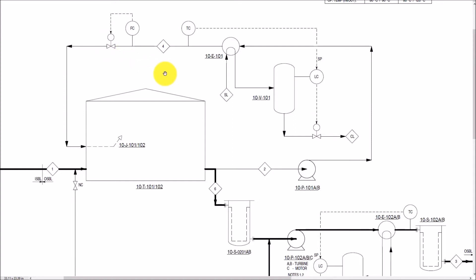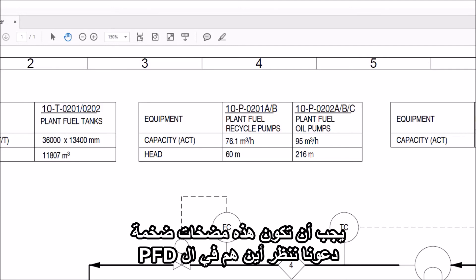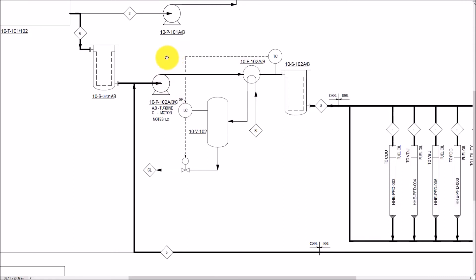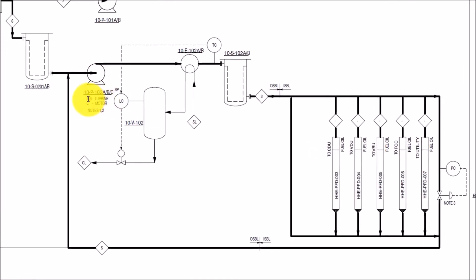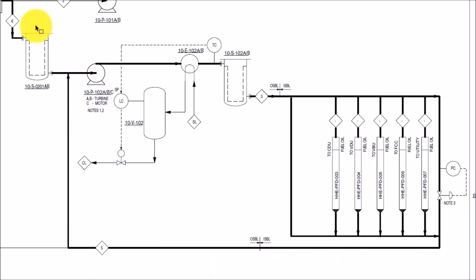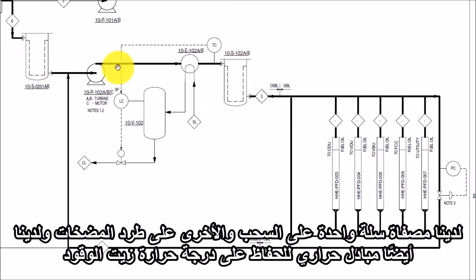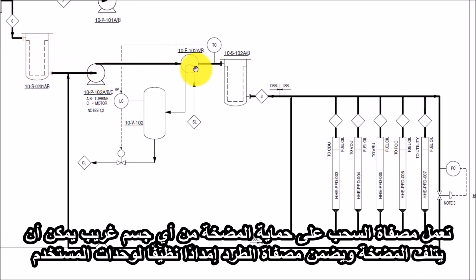It can be hydraulic, pneumatic, or motor operated type. See this detail of the pump. The recycle pump has a head of 60 meters and the plant fuel oil pump has a head of 216 meters — this must be a huge pump. These pumps are turbine driven, which means these are critical pumps. Turbine-driven pumps are provided where you want to run the pump even if there is a total power failure in your plant. Here we have two basket strainers — one on the suction side and one on the pump discharge side — and a heat exchanger to maintain the temperature of the fuel oil. The suction strainer will protect the pump impeller from any foreign object that can damage the pump, and the discharge strainer will ensure clean supply to the user unit.